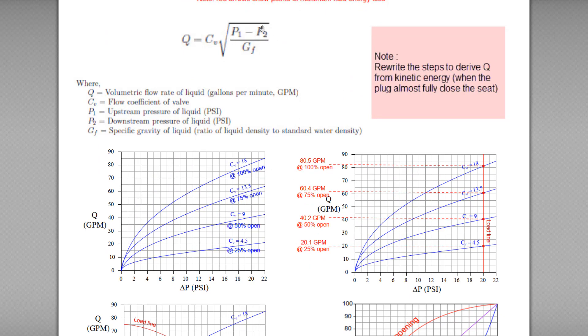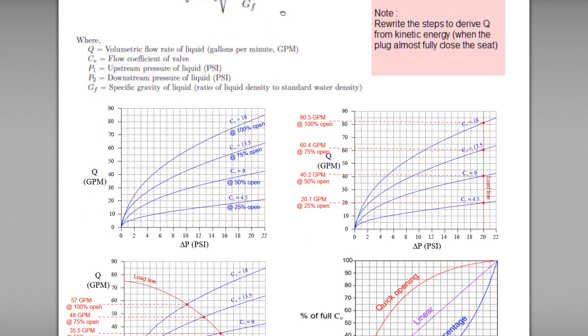We can use this curve to understand the CV further. Let's see, I assume that the differential pressure is fixed. Like in this curve, the differential pressure here is fixed at 20 psi. So from here, you can see the CV reading will change. The CV value change from 4.5 to 9 to 13.5 and 18 depends on the different valve opening position.